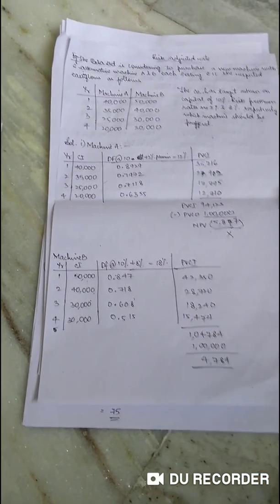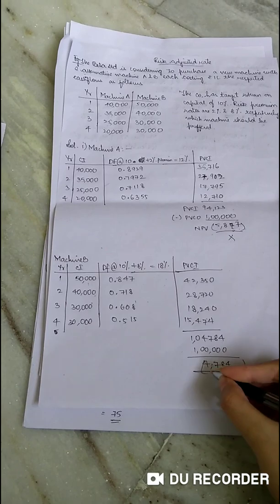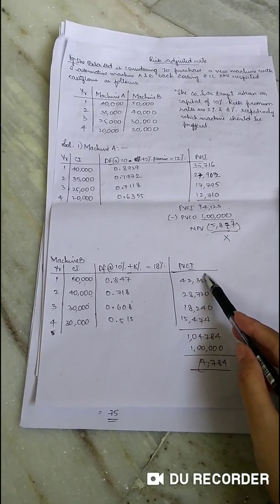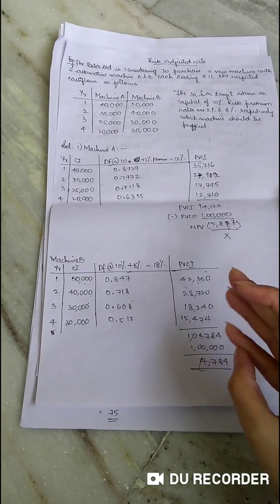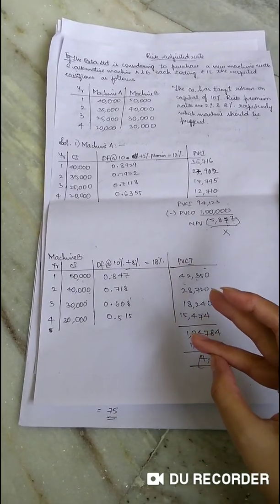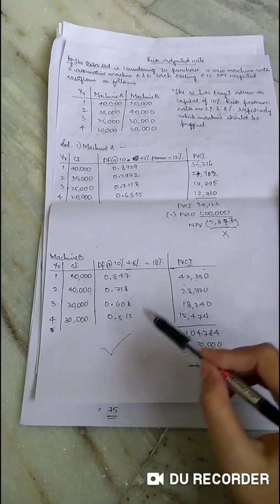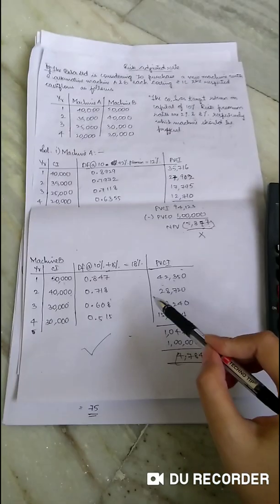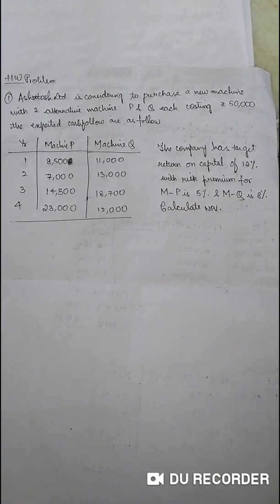Here, if you see, the NPV is positive in machine B and negative in machine A. So which project will we be selecting? After considering the present values and also your risk premium, it is suggestible that the investor accepts machine B.